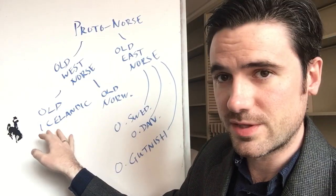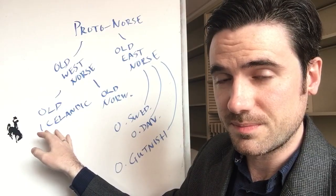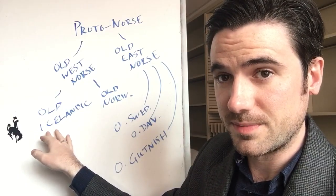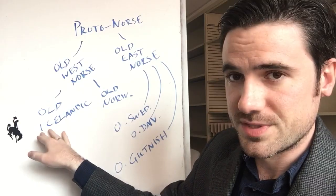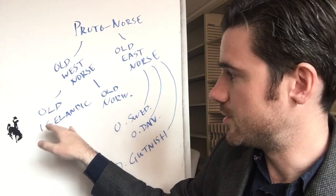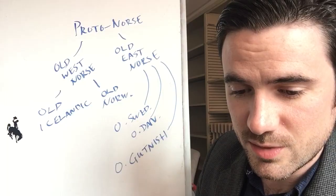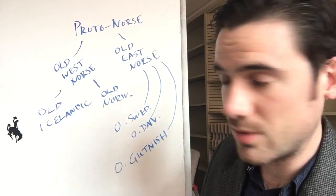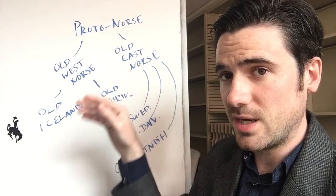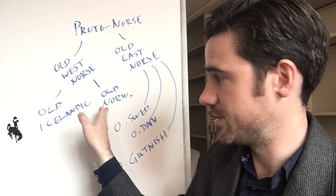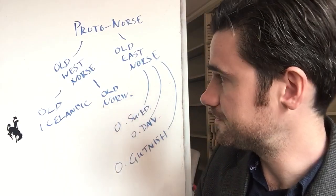Since most of the literature that's preserved from Scandinavia before the modern period is in Iceland, this is what we use as the basis for learning Old Norse. Since the question seems to cover both Old Norwegian — which is Old West Norse — and Old East Norse, I'll talk a little bit about some things that are distinct for Old Norwegian and then some things that are distinct for Old East Norse.